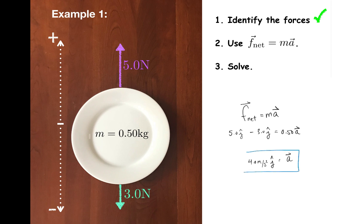You might be thinking that including the j hats in that calculation was kind of unnecessary, and I agree. Anytime the forces are all along a line, as they are in this example, you can just drop the i hat, j hat, k hat notation. You do need to take the direction of the vectors into account by including the proper signs, as I have done here, but as long as you do that, you can drop the rest of the vector notation.